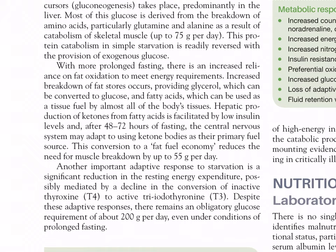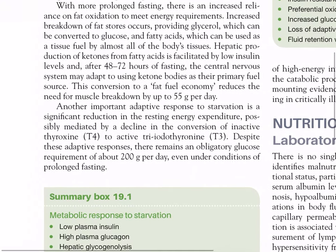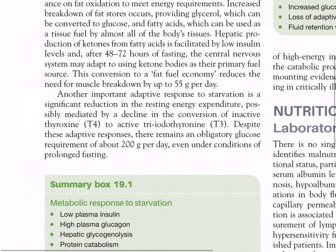After 48 to 72 hours of fasting, the central nervous system may adapt to using ketone bodies as its primary fuel source. This conversion to a fatty fuel economy reduces the need for muscle breakdown by up to 55 grams per day. Another important adaptive response to starvation is a significant reduction in resting energy expenditure, possibly mediated by a decline in the conversion of inactive thyroxine T4 to active triiodothyronine T3. Despite these adaptive responses, there remains an obligatory glucose requirement of about 200 grams per day even under prolonged fasting.